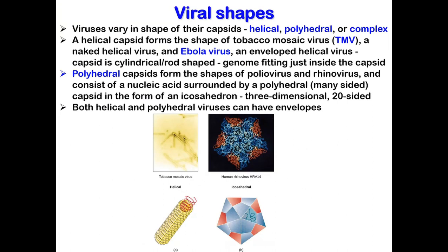Viruses vary in the shape of their capsids. The capsids can be helical, polyhedral, or complex. Helical capsids are shaped like hollow tubes with protein walls. The tobacco mosaic virus (TMV) is a well studied example of the helical capsid structure. The capsid of TMV contains the RNA genome, which is wound in a spiral and lies within a groove formed by the protein subunits. The helical capsid structure can be seen at the bottom left of the slide.